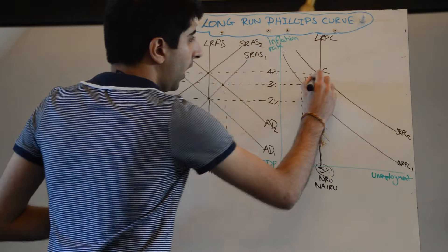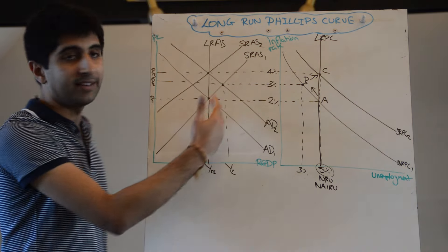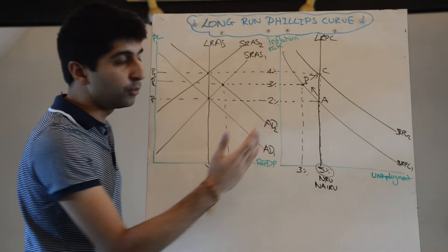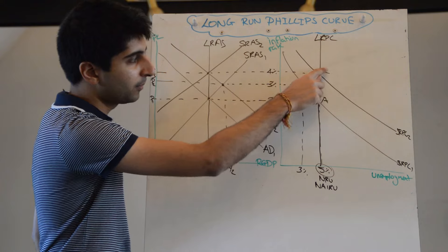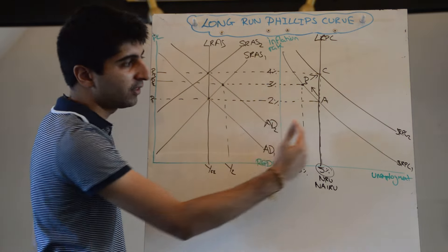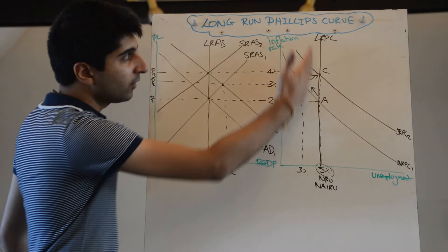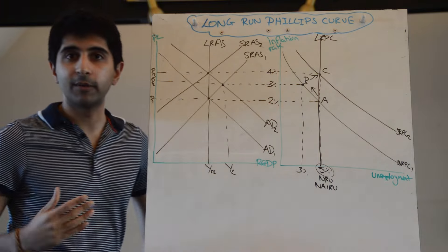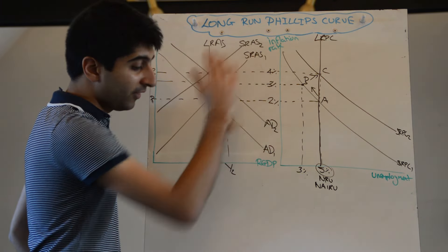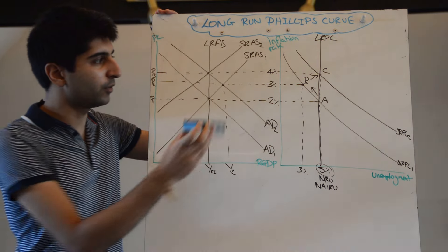I've derived the long-run Phillips Curve from an increase in AD in the classical model. If I show a decrease in AD in the classical model, I will also show a movement from A to C, but this time C would be down here somewhere, as we move first of all down the short-run Phillips Curve, and then shift the Phillips Curve to the left as wage expectations are revised downwards — but we would still get a vertical long-run Phillips Curve. Basically, the long-run Phillips Curve is just a long-run aggregate supply curve.